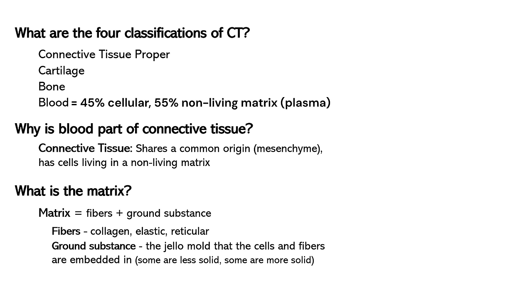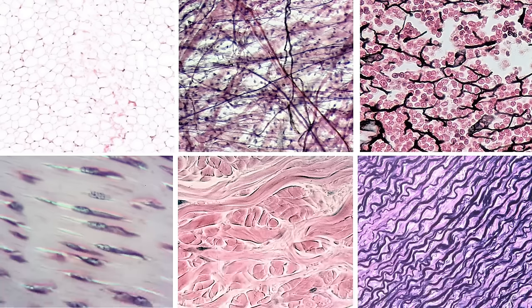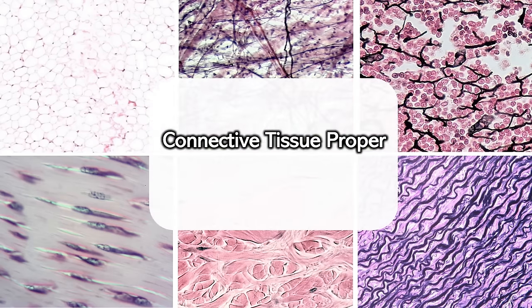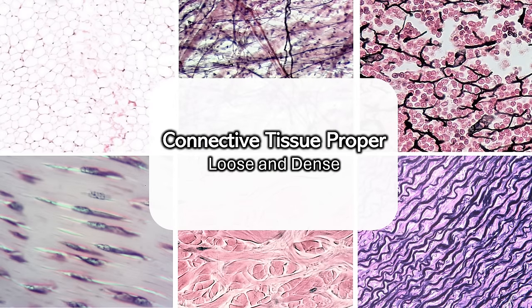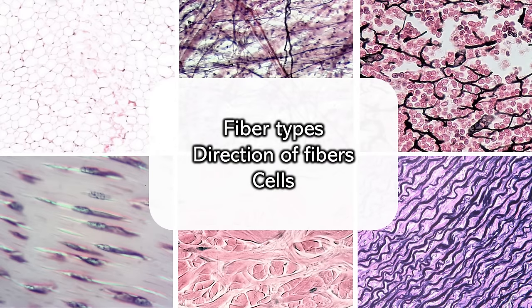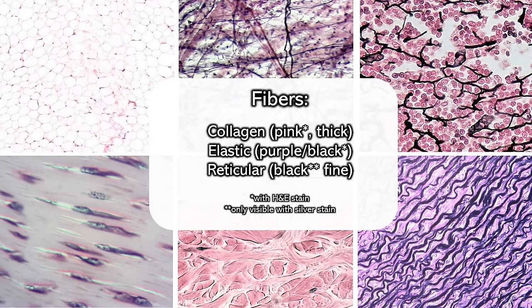Now that we've got the background information out of the way, we can start looking at the different classifications. Starting with connective tissue proper, which comes in two flavors: loose connective tissue and dense connective tissue. When differentiating connective tissue proper, think about what kind of fibers you're seeing, what direction those fibers are going, and classify the cells. Using the most common stain, H&E, collagen will be pink and elastic will be purple to black — though if a different stain is used, those colors won't apply.